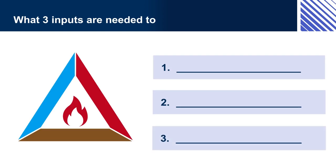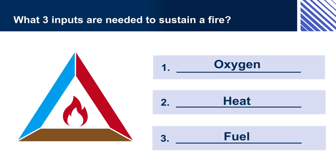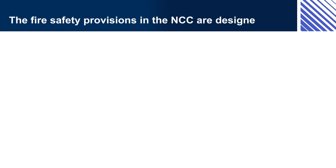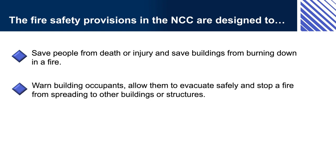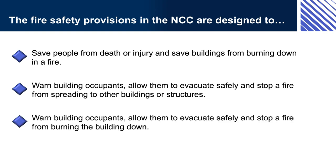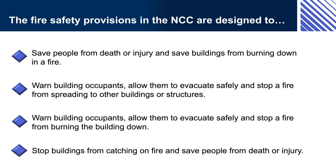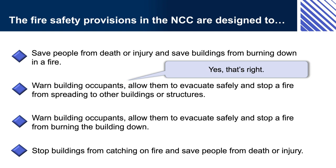What three inputs are needed to sustain a fire? Oxygen, heat, and fuel. All three inputs are required to sustain a fire, so fire safety measures in the NCC are generally targeted towards reducing one or more of these inputs. The fire safety provisions in the NCC are designed to warn building occupants, allow them to evacuate safely, and stop a fire from spreading to other buildings or structures. Option 2 is correct.